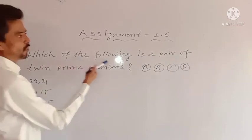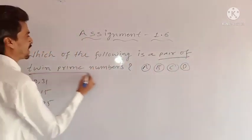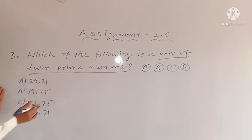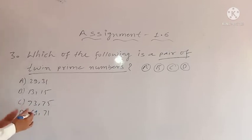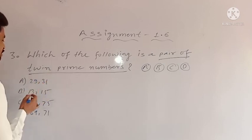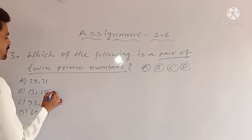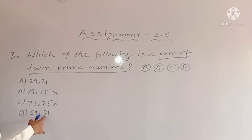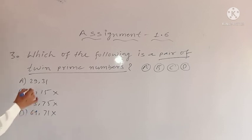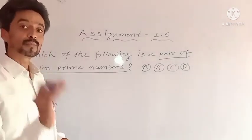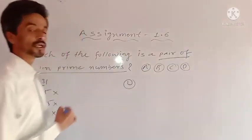Problem 3: Which of the following is a pair of twin prime numbers? Option A: 29 and 31. Option B: 13 and 15. Option C: 73 and 75. Option D: 69 and 71. 13 is a prime number but 15 is a composite number, so that is wrong. 73 is a prime number but 75 is not, so not a twin prime. 69 is a composite number and 71 is prime, so that is also not a twin prime pair.